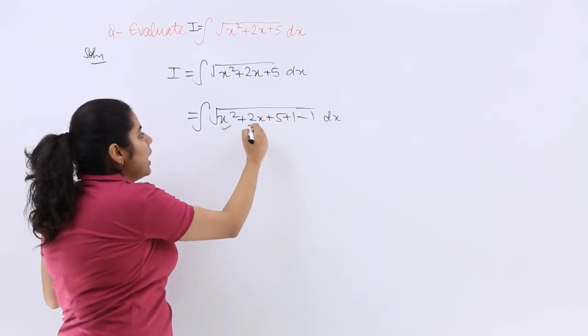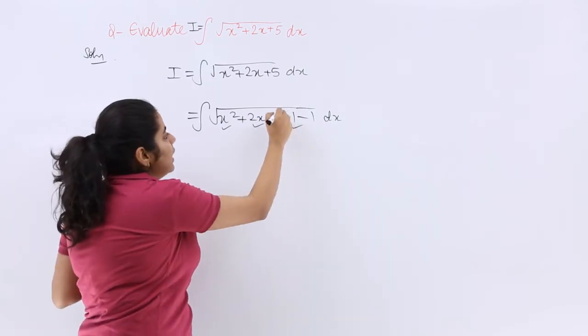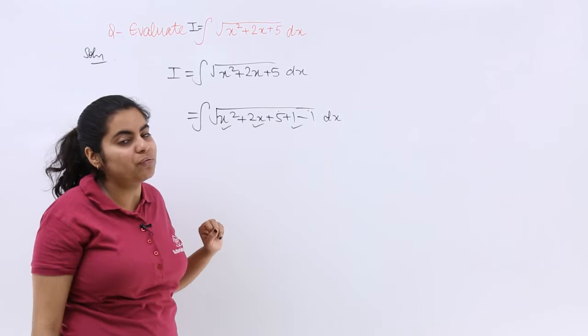Now, x², 2x, and 1 make (x + 1)², while 5 minus 1 makes 4, which is 2². This we have to use and then the question is not difficult at all.